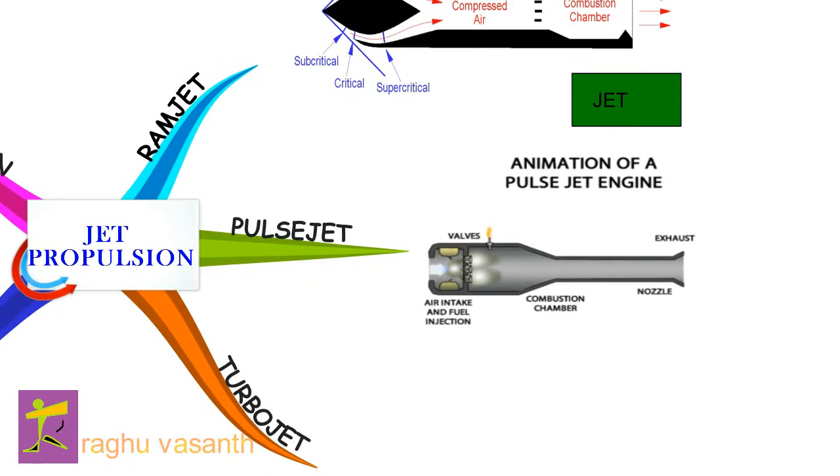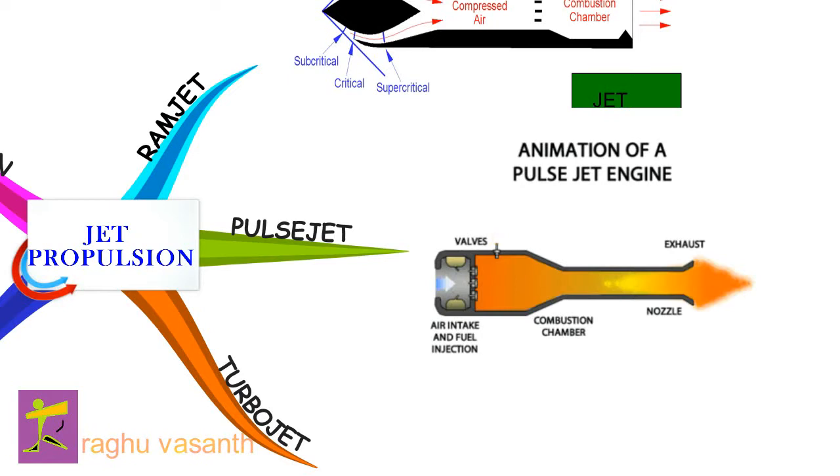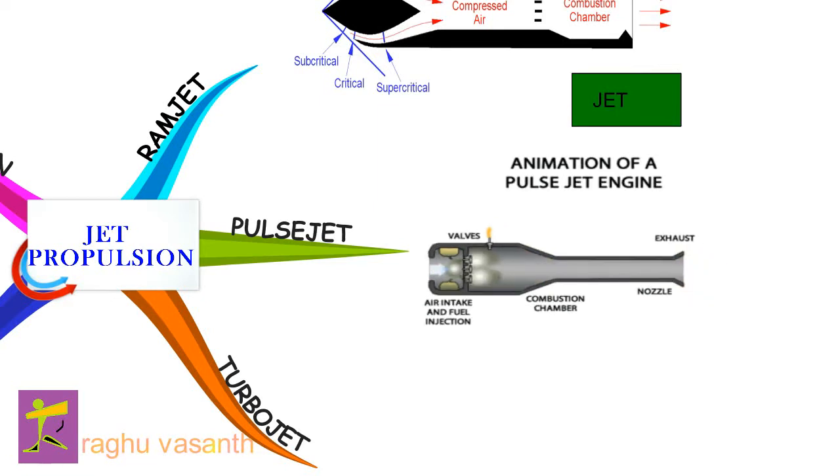A pulse jet engine, or pulsejet, is a type of jet engine in which combustion occurs in pulses. A pulse jet engine can be made with few or no moving parts and is capable of running statically. Pulse jet engines are a lightweight form of jet propulsion, but usually have a poor compression ratio and hence give a low specific impulse.